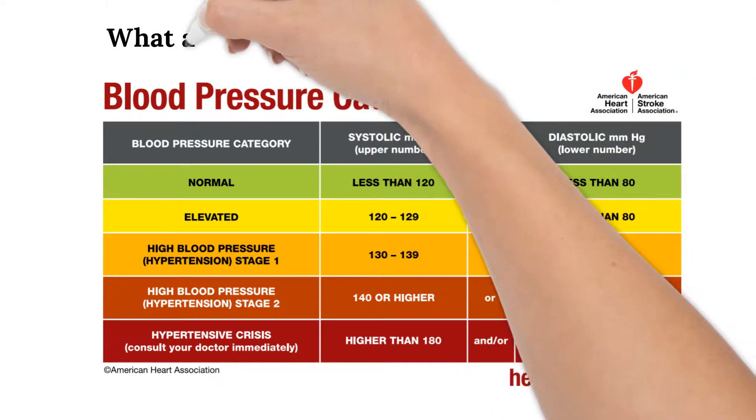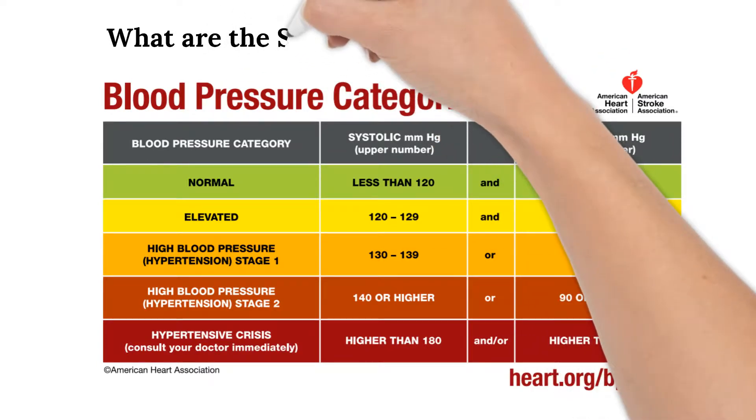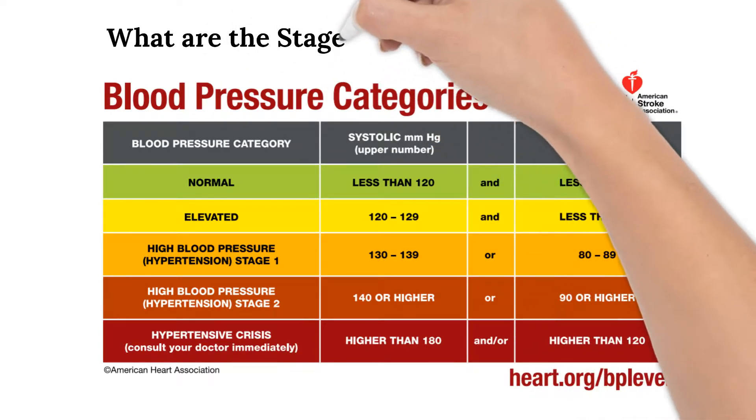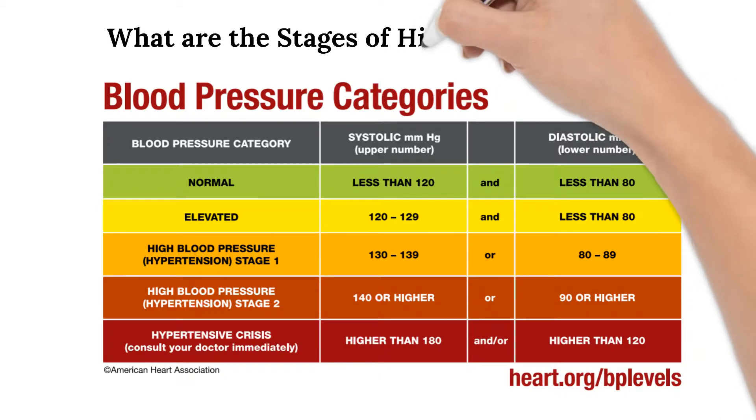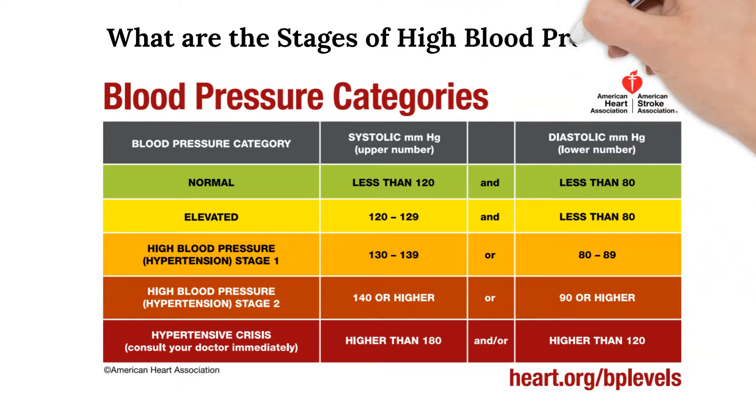When systolic pressure is between 130 and 139 mmHg and diastolic pressure is between 80 and 89 mmHg, that is referred to as stage 1 high blood pressure or hypertension stage 1.